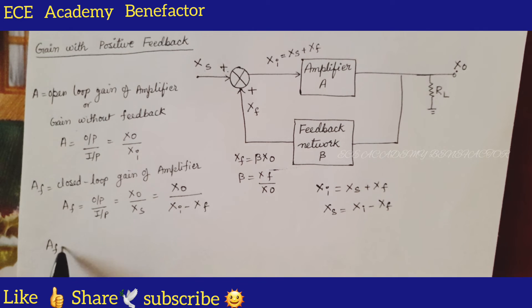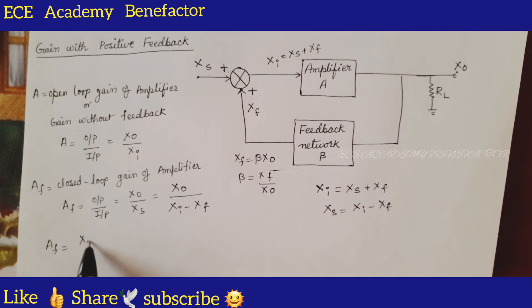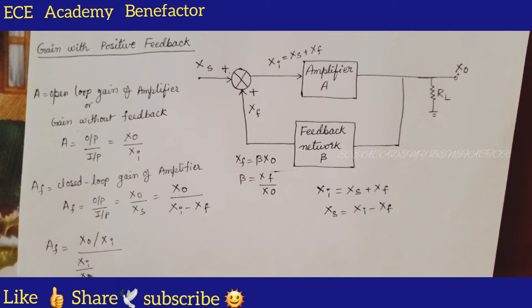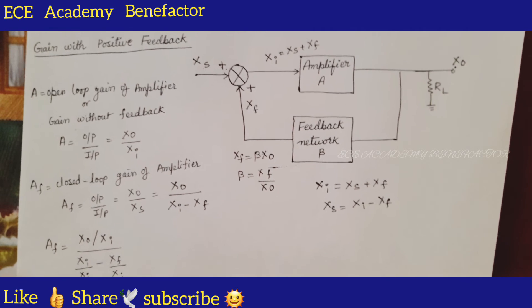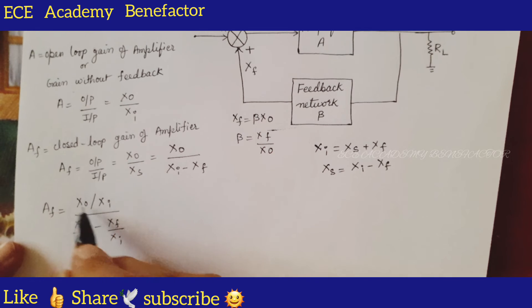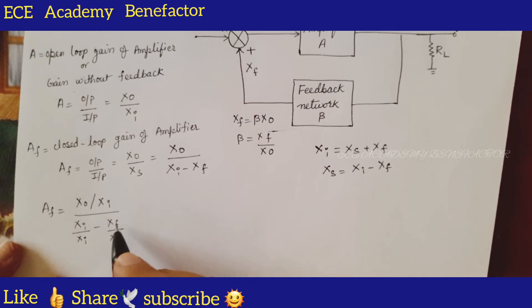Now, let us divide this numerator and denominator by Xi. What is Xo by Xi? It is A, and this gets cancelled. Now, let us divide this term by Xo.